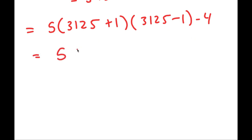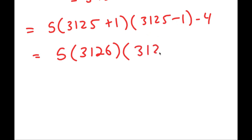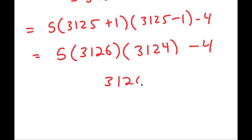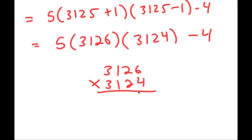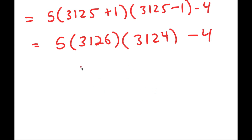So I get 5 times 3,125 plus 1 times 3,125 minus 1, minus 4. Now all that's left to do is simplify this. 3,125 plus 1 is 3,126, and 3,125 minus 1 is 3,124, and then we have minus 4 at the end. The main challenge now is multiplying 3,126 by 3,124. We could multiply the normal way, but this is going to take very long and could result in many errors.